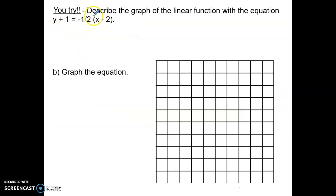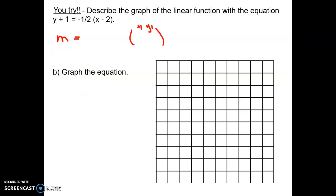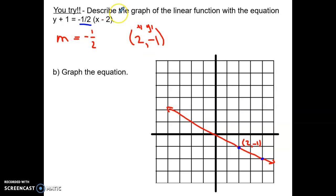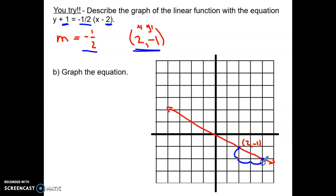Now you try: describe the graph of the linear function with the equation y plus 1 equals negative one-half times (x minus 2). State your slope and your point (x₁, y₁), then graph the equation. Pause the video here. You should have found that the slope is negative one-half, x₁ is positive 2, and y₁ is negative 1. Be very careful with those signs — if they've changed from the original equation, they're negative. Plot the point (2, −1), count down 1 and over 2, then draw a straight line.